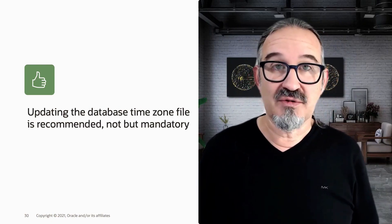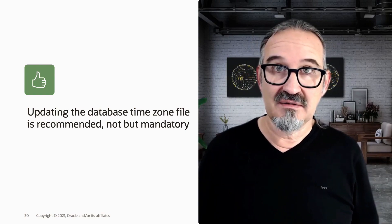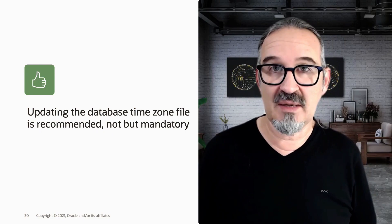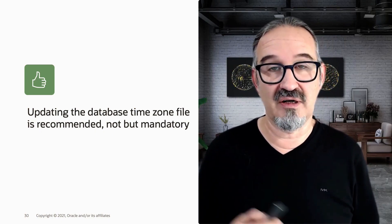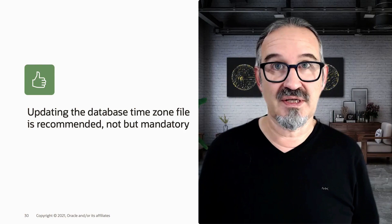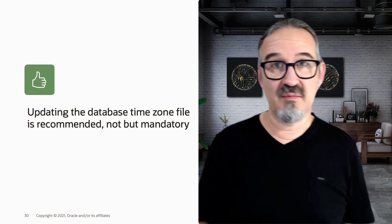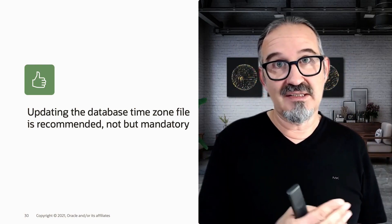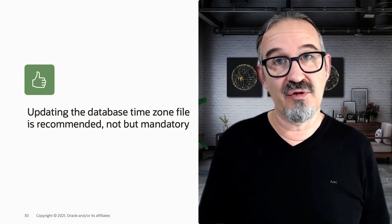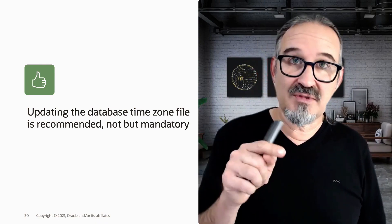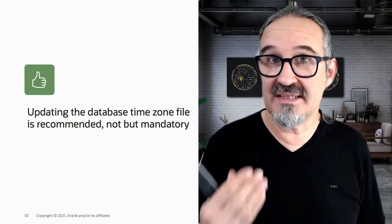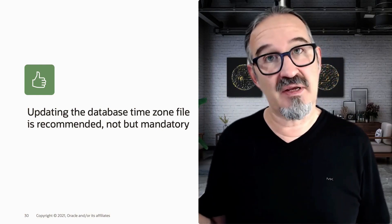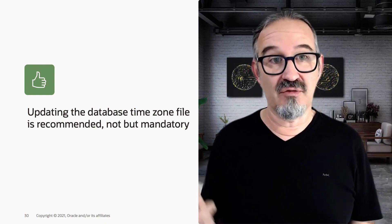Updating the database time zone file is recommended normally as part of an upgrade, but it's not mandatory. So you can upgrade and you don't have to upgrade the time zone file. In my previous example, when I lift over my PDB from 12201 with time zone 26 to 19C with time zone 32, and I skip the time zone adjustment in AutoUpgrade, my PDB will still have time zone 26 while the CDB has time zone 32. That works.